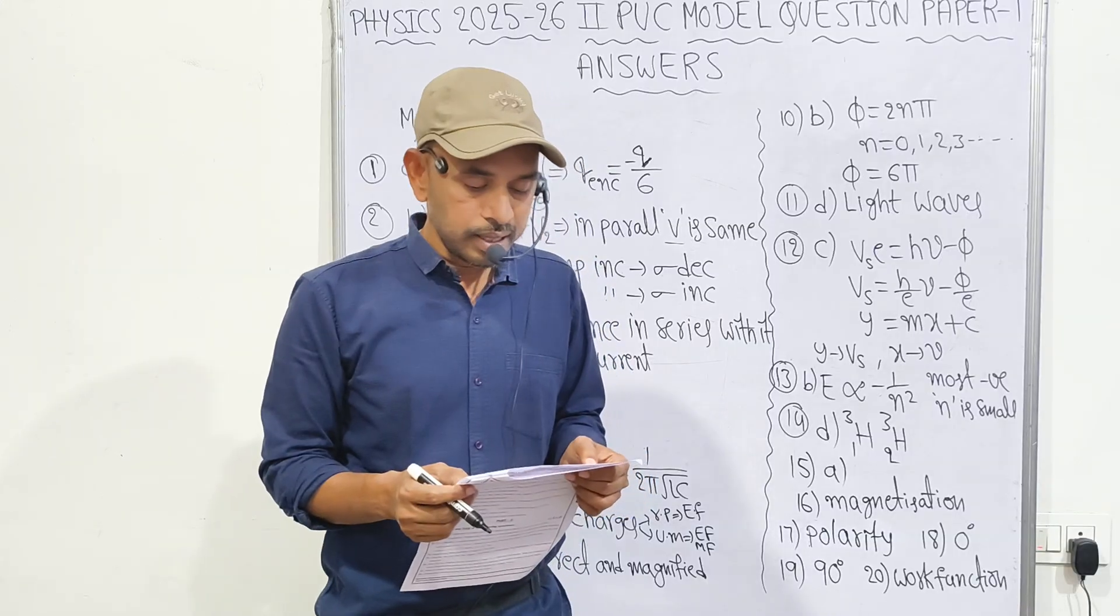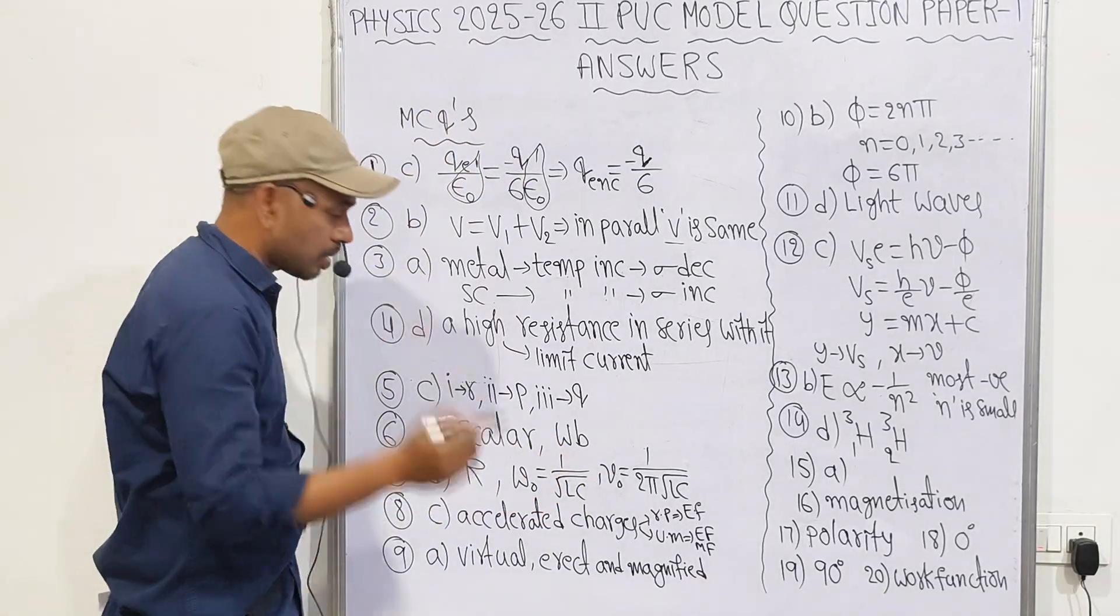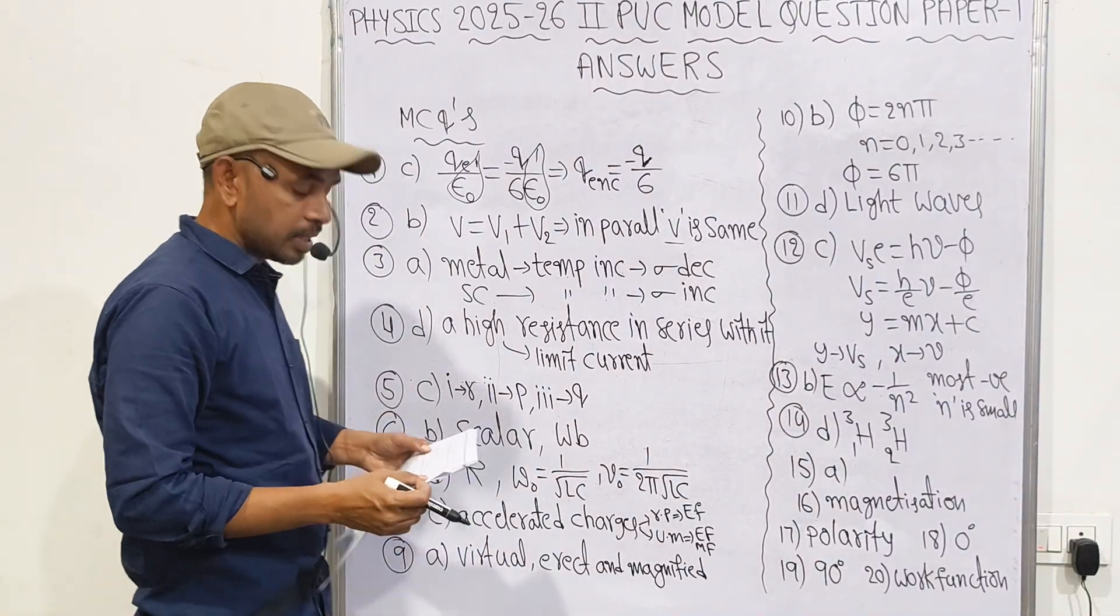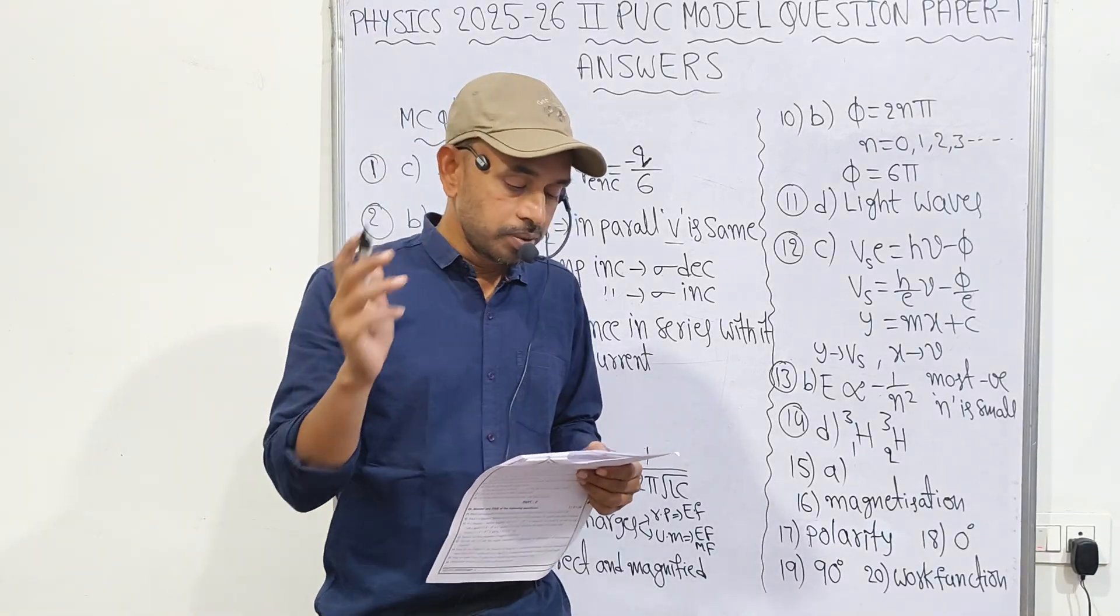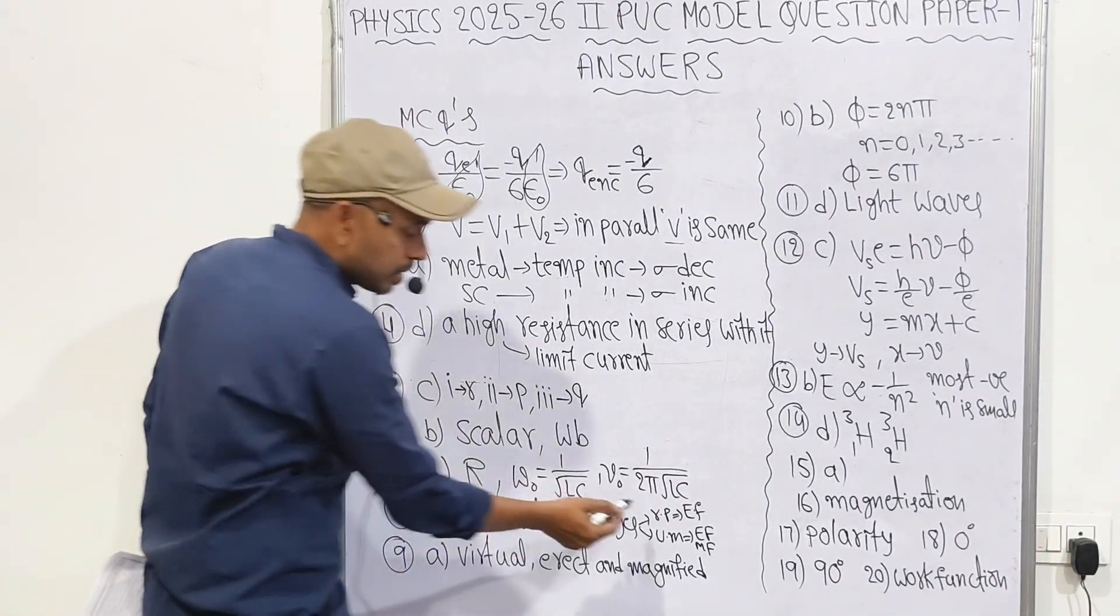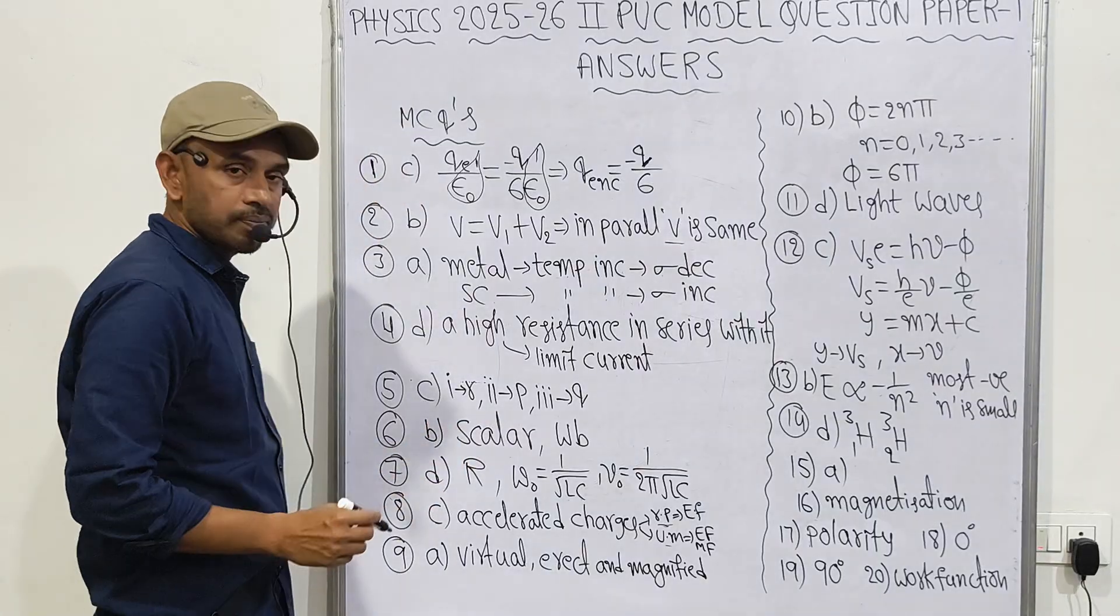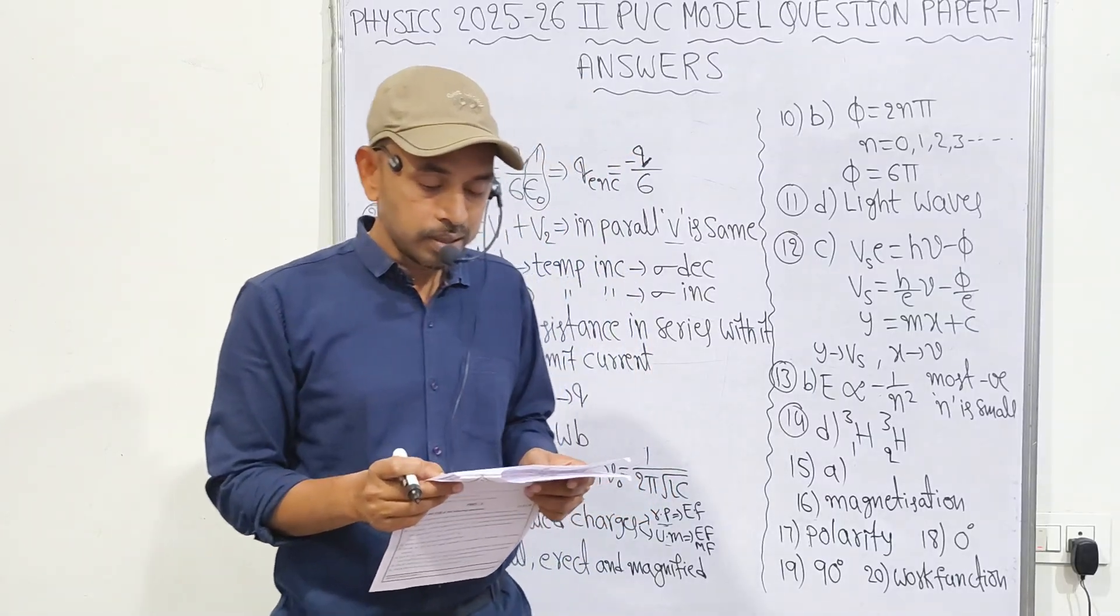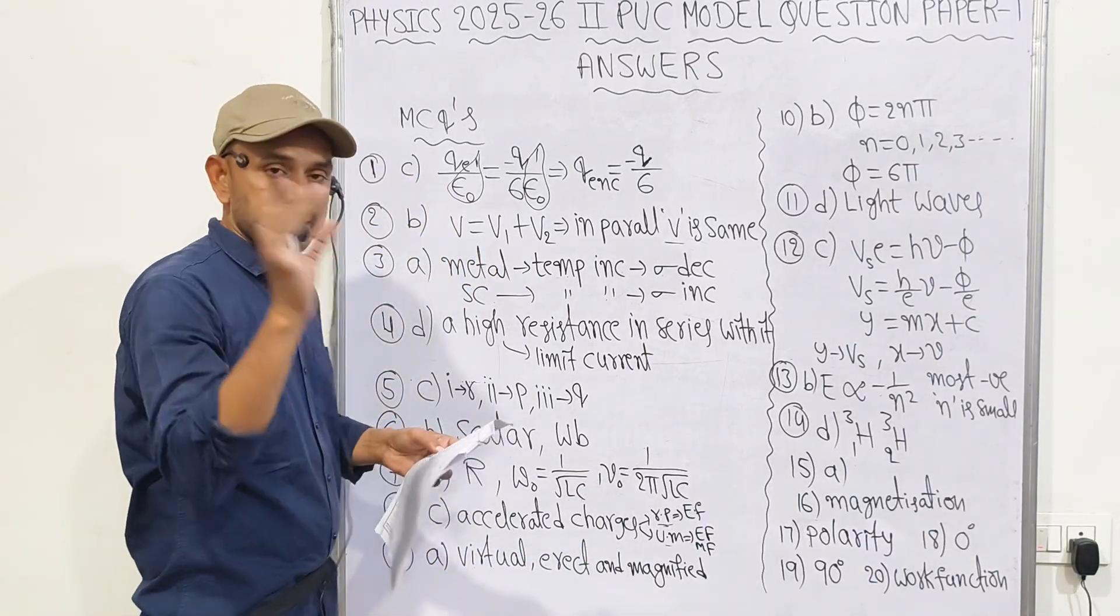Seventh question: the resonance frequency of an LCR circuit remains constant even if there is any variation in value. Resonating frequency depends only on L and C, does not depend on R, but option given includes R also. That's why D is correct. Eighth question: electromagnetic waves are produced by accelerated charges, option C. If it is rest position charge means only electric field. Uniform motion means both electric field and magnetic field. Ninth one: real object placed between pole and principal focus of concave mirror, the image formed is virtual, erect and magnified. Option A is correct.